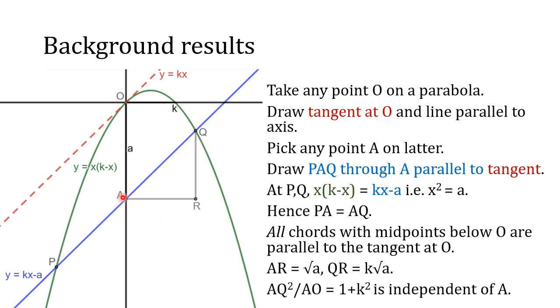Lastly we can say directly what AR and RQ are. We could calculate AQ using Pythagoras theorem, and if we do, we see that AQ squared divided by AO is dependent on k but not dependent on A. Once you've got your parabola, it doesn't matter which A you choose; this ratio AQ squared to AO is always a constant.